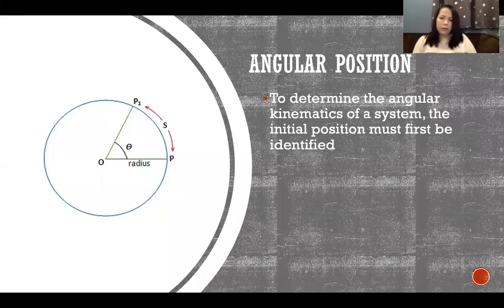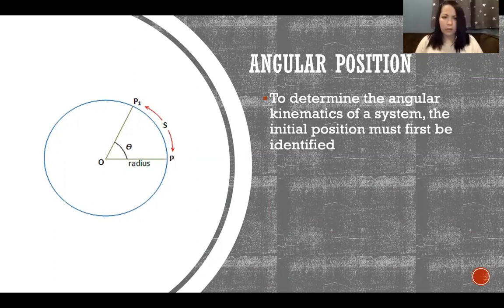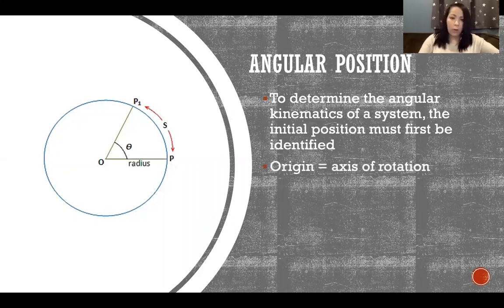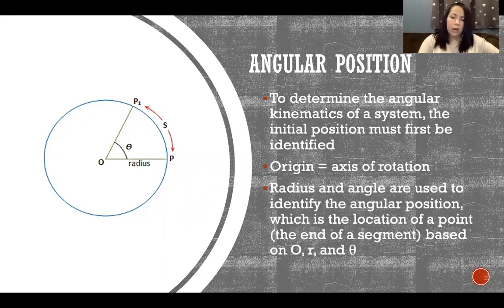To determine the angular kinematics of a system, the initial position must first be identified. The origin of our polar coordinates is the axis of rotation of the thing we're analyzing. The radius and angle of our polar coordinates are used to identify the angular position — the location of a point, usually the end of the segment — based on the origin, the radius, and theta.